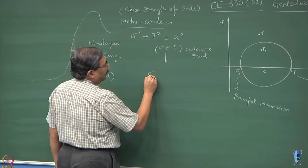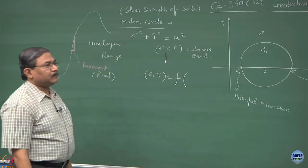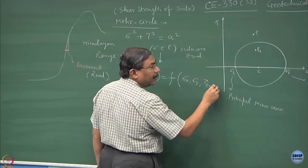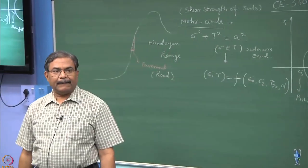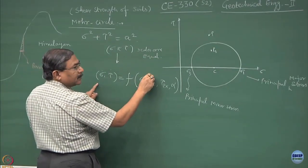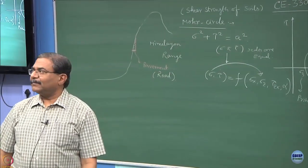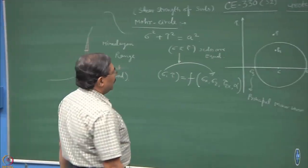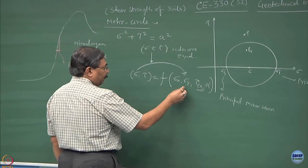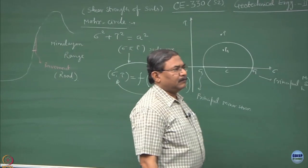The larger picture is that we wanted to know the state of stress as a function of sigma x, sigma z, tau zx, and alpha. It could be a reverse problem also — if I know this, I would like to know sigma and tau, or the forward situation would be if I know sigma x, sigma z, tau zx, and alpha, I can compute sigma and tau. Both ways are possible.